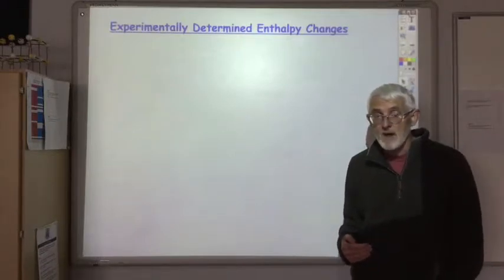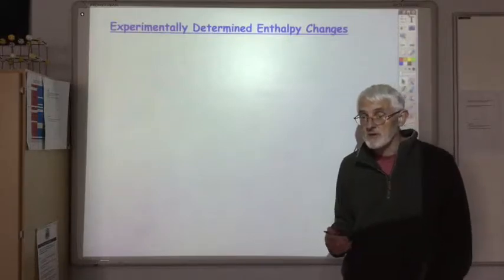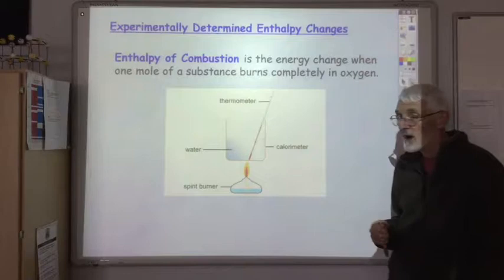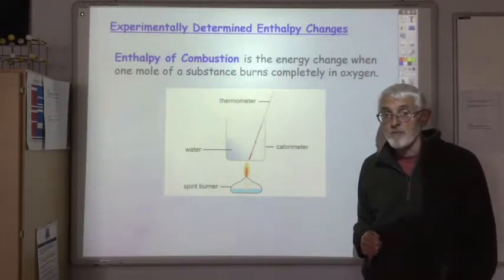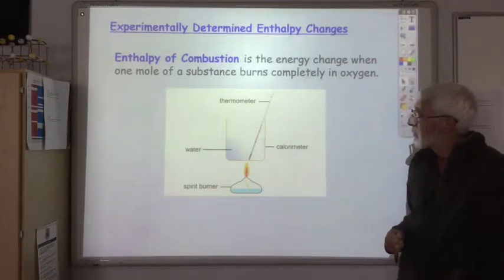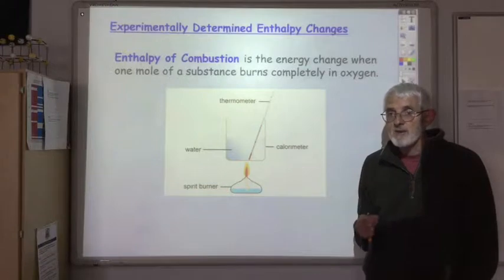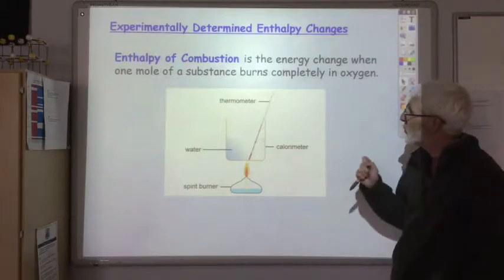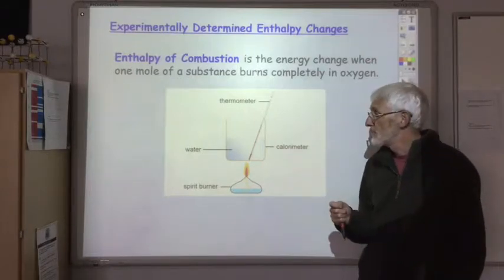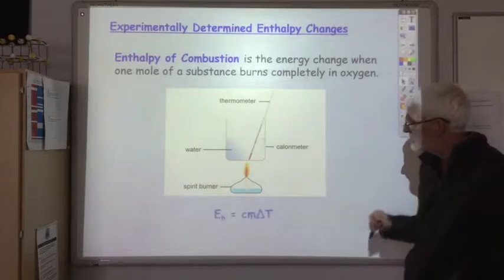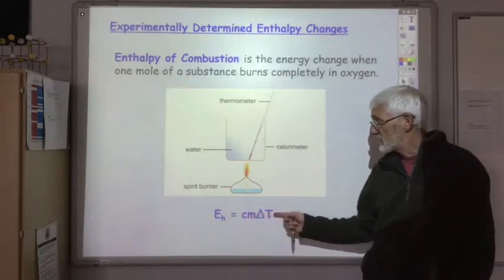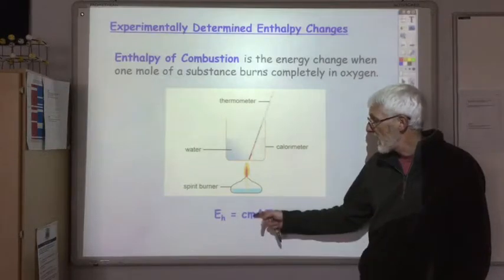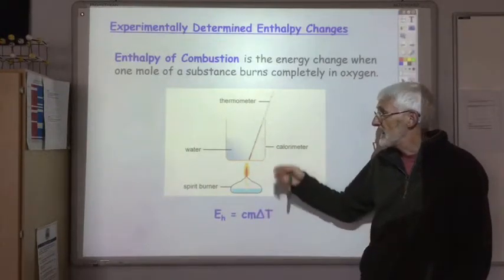For some reactions we can simply measure the enthalpy change. In National 5 you used this equipment to work out how much energy was given out by a fuel burning. We're going to extend this to determine the enthalpy of combustion for different substances. The enthalpy of combustion is the energy change when one mole of a substance burns completely in oxygen. We use the equation EH = CM∆T which we used in National 5, where C is the specific heat capacity of water, M is the mass of water in kilograms, and ∆T is the change in temperature.